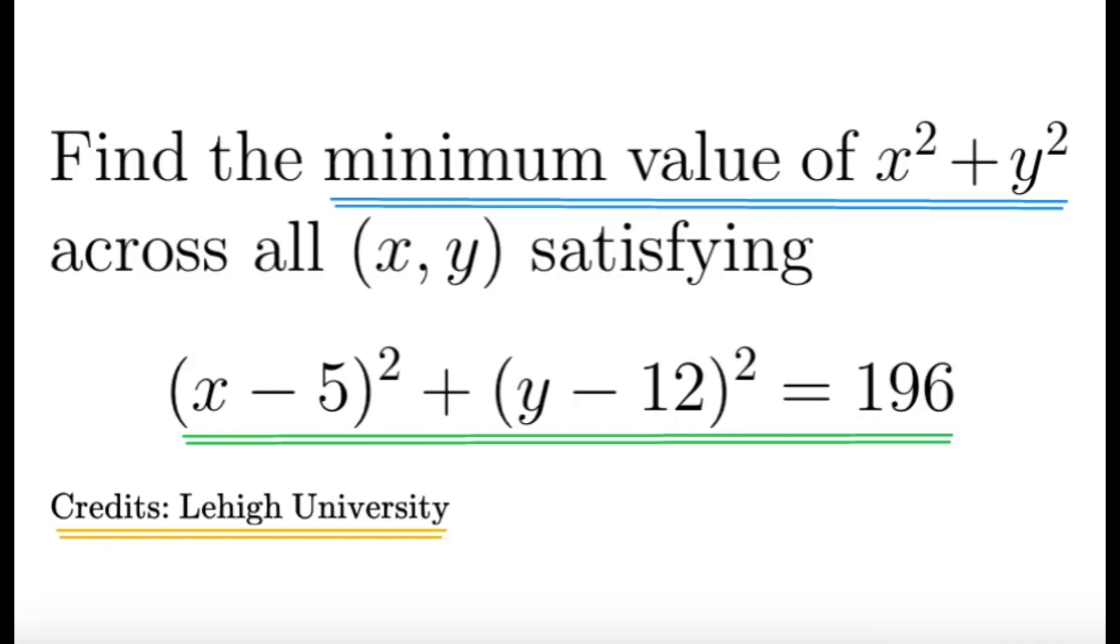Alright, so let's focus on the given: x minus 5 quantity squared plus y minus 12 quantity squared equals 196. That is in the form of the center radius form of a circle, and there might be something related to that in the solution. So let's try to graph this.